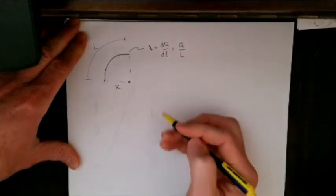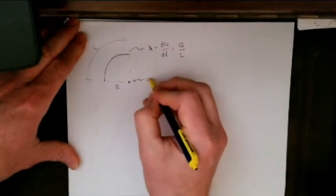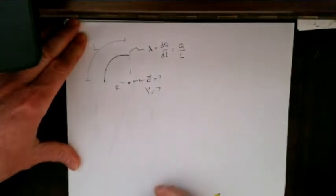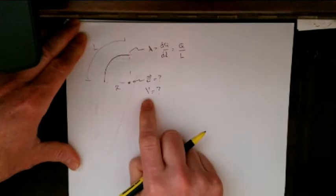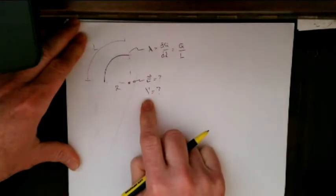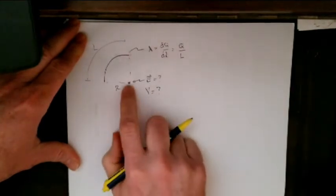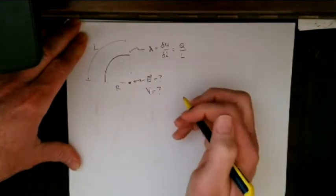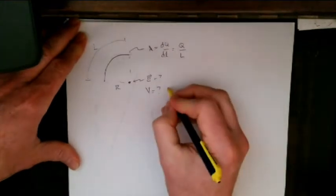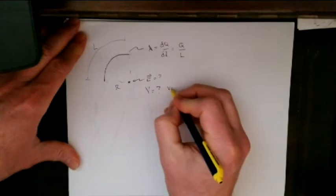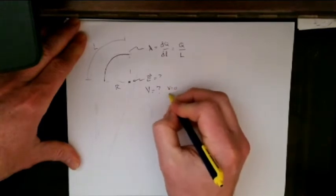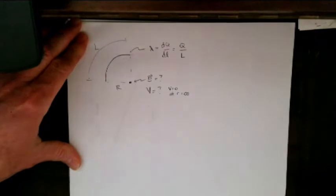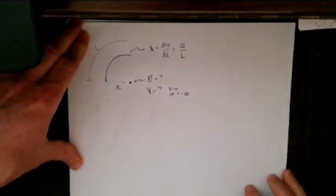What I want to find here is the electric field at this point and the potential at this point. Since I can establish zero to be anywhere I want it to be, I could officially make it zero and be done with it, but that would really spoil the purpose of what I'm trying to do here. So we will establish that V equals zero at R equals infinity, which is the most common way of doing that.